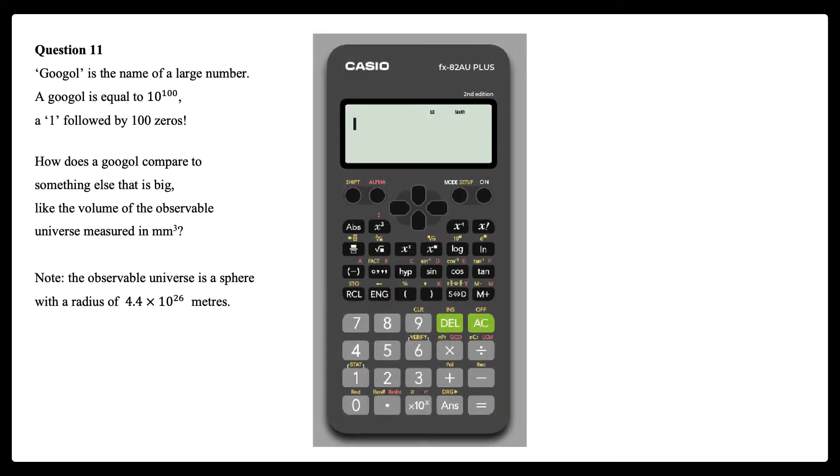With a Casio FX82AU+ or Casio FX100AU+ scientific calculator, scientific notation can be used to work with large or small numbers. The use of the calculator's memory to store these numbers can be useful.